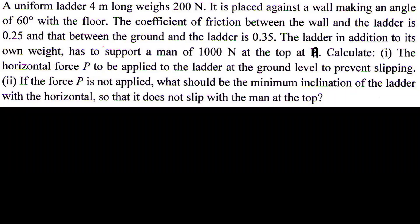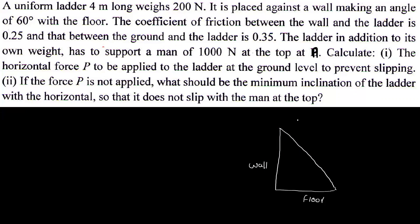A uniform ladder 4 meters long, weighing 200 N, is placed against a wall making an angle of 60 degrees with the floor. We have a floor and a wall. The length is 4 meters, weight is 200 N, and the angle with the floor is 60 degrees.